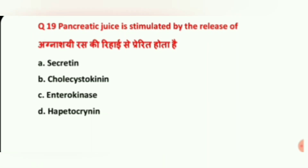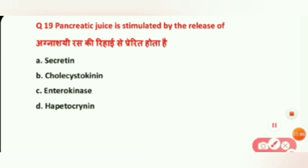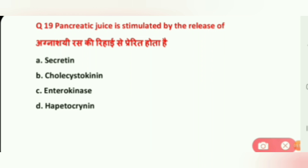Question 19: Pancreatic juice secretion is stimulated by the release of which substance? Options are: A, Secretin; B, Cholecystokinin; C, Enterokinase; D, Hepatocranin. The correct answer is A, Secretin.